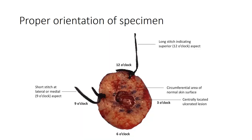Proper orientation of the specimen is important. If you want to know the margins of a lesion in the skin or any tissue, label it with sutures so you can obtain more information. Different sutures of different colors and different lengths can be used. For example, with a skin lesion, a long suture at 12 o'clock indicates the superior margin and a short stitch at 9 o'clock marks another margin, enabling proper orientation for the histopathologist.